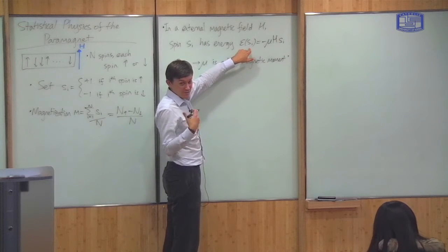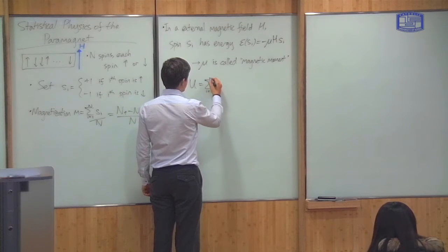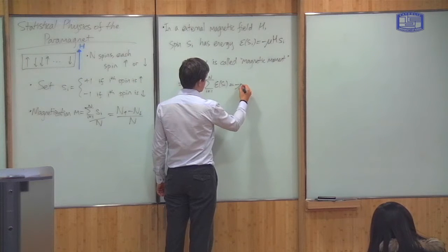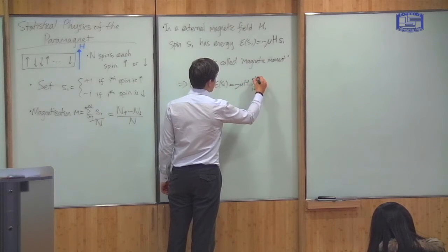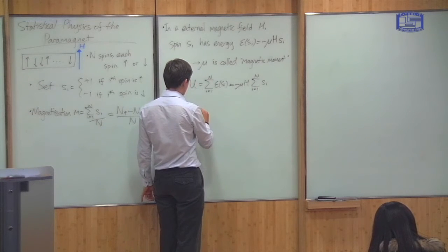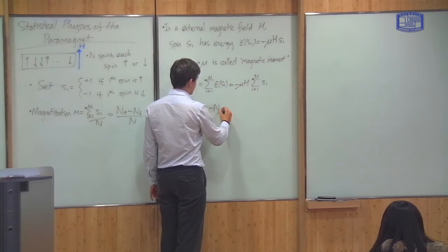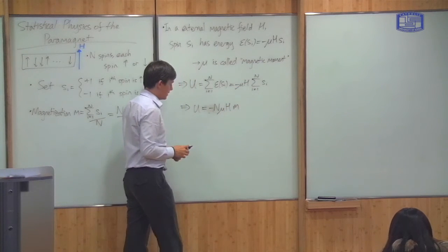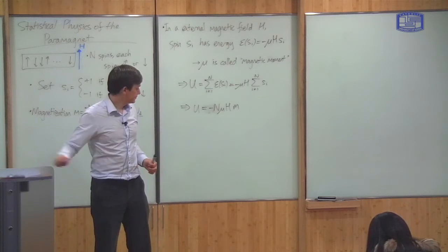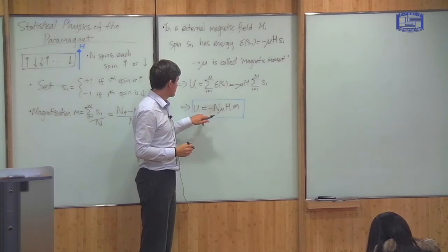If this is the energy of one spin, then I can find the energy of the whole system simply by summing over the spins. The internal energy U is just equal to the sum over i from one to N of ε_i, which equals minus μH times the sum of S_i from i equals one to N. Using the definition of magnetization, which has this sum in it, U is simply minus N μH times the magnetization. So a higher magnetization gives you a lower energy. We've connected the magnetization to the energy of the system.